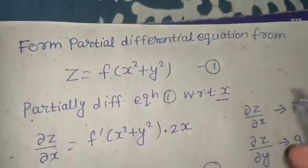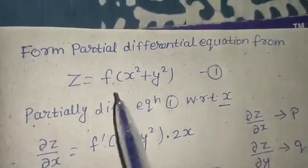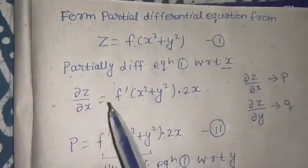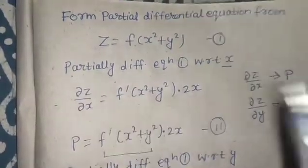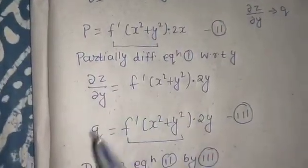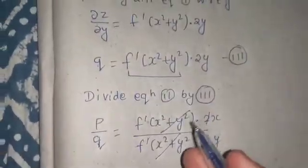So to summarize: we had to form a partial differential equation from z = f(x² + y²). First, partially differentiate z with respect to x taking y as constant, then with respect to y taking x as constant. Dividing the two results caused f dash(x² + y²) to cancel, and finally we obtained py minus qx equals zero. I hope you understood this — thanks and have a very nice day.